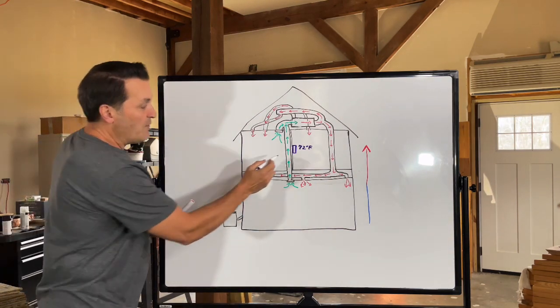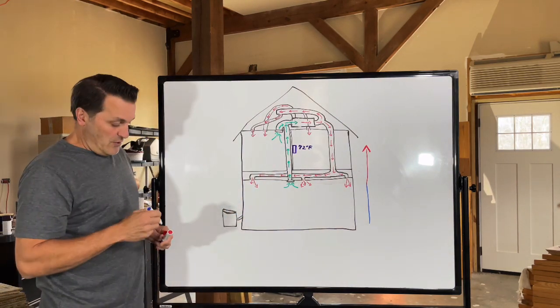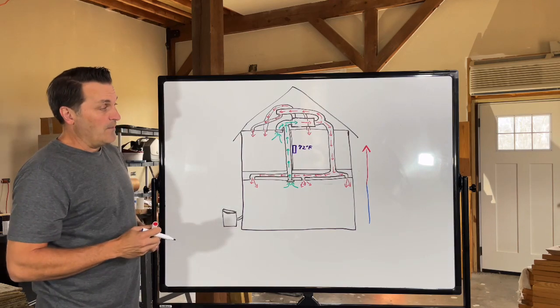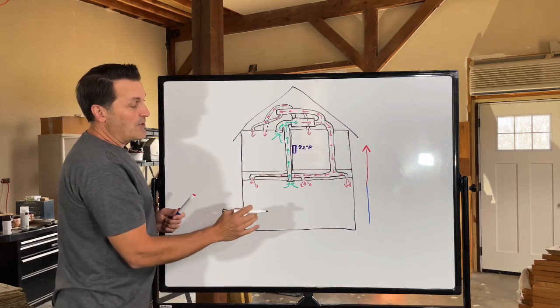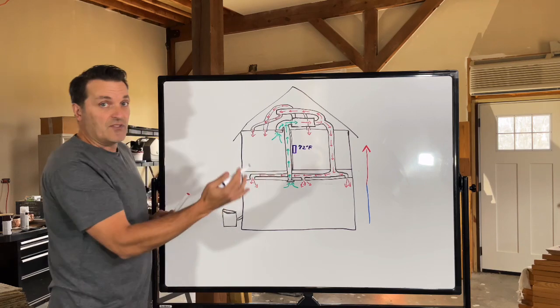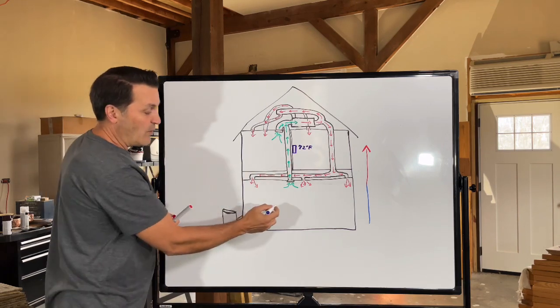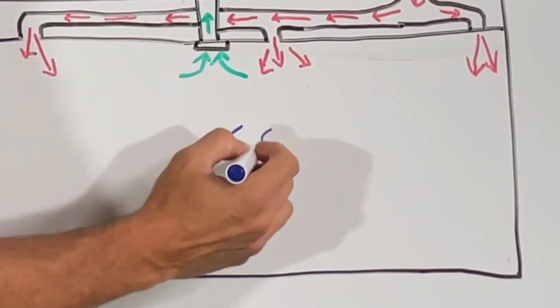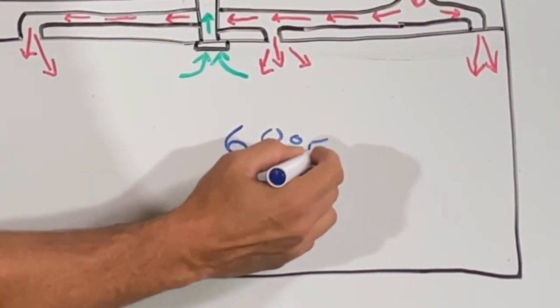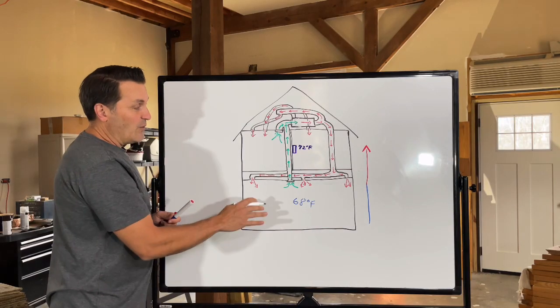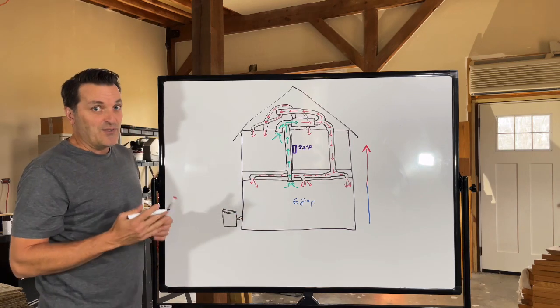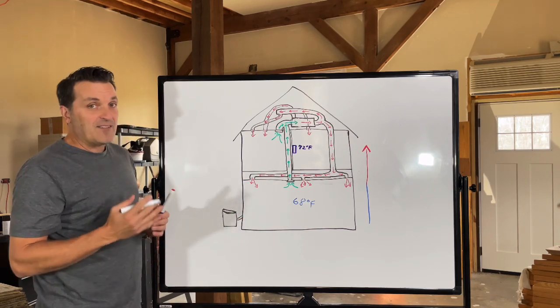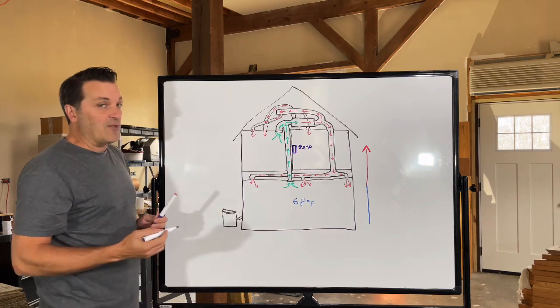So if you set that thermostat to 72 degrees on the second floor and it achieves that temperature up there, it's going to be 72, 73 degrees. Where down here, you may only get to 68 degrees or maybe less. So you're already seeing a temperature difference, and that's pretty significant, five degree difference between floors.